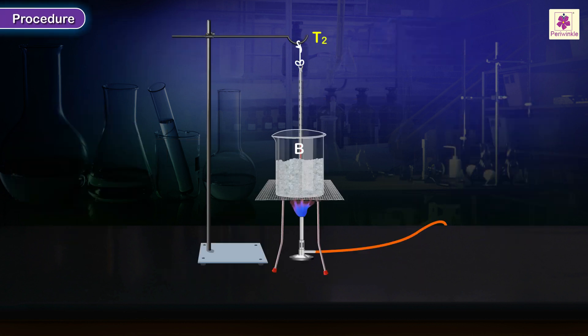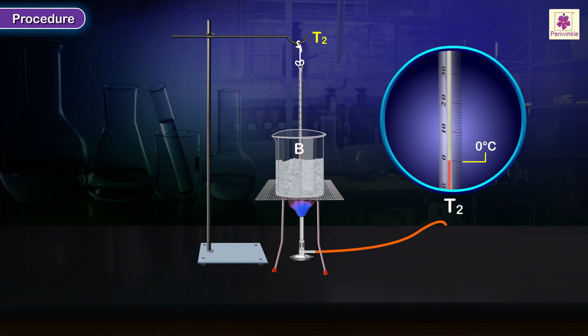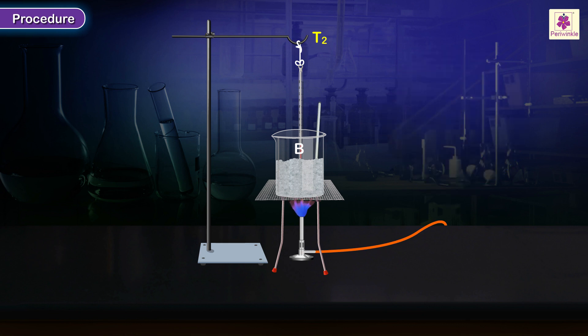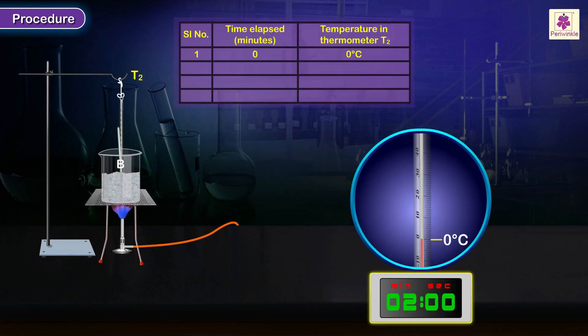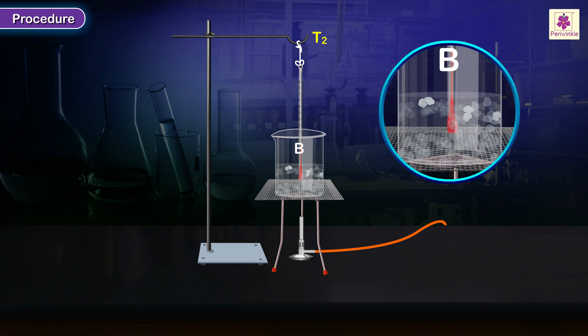Procedure. Gently heat beaker B when T2 shows 0 degrees Celsius. Gently stir the ice using another clean glass rod. Read and note the temperature once every two minutes. Stop heating beaker B when only a small quantity of ice remains unmelted in it.